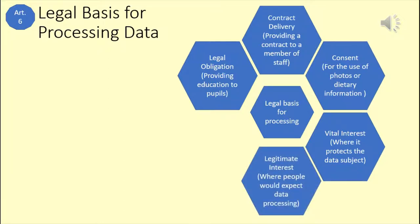Where an individual would expect their data to be used for their benefit, there may be a legitimate interest in sharing information. Many schools have communication systems that parents can give their consent to receive information. However, if the school were closed due to snow, for example, there would be a legitimate interest in letting the parent know the school was closed, whether they were on the school communication list or not.